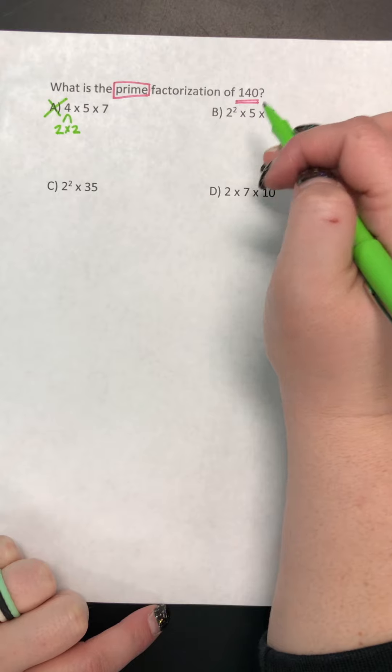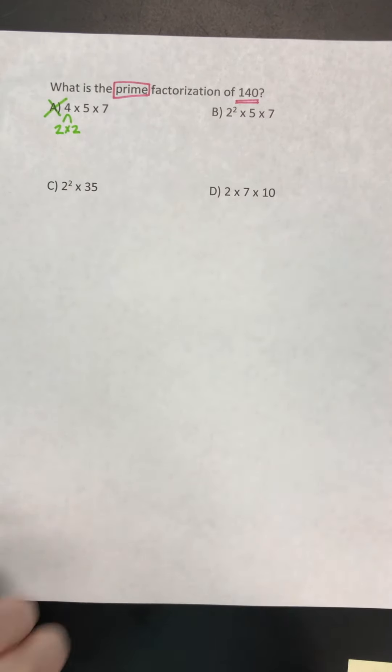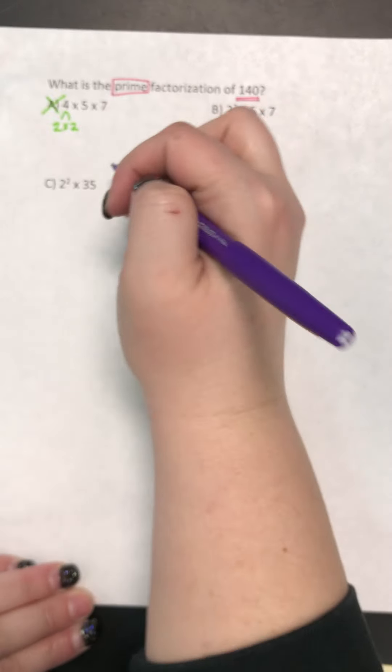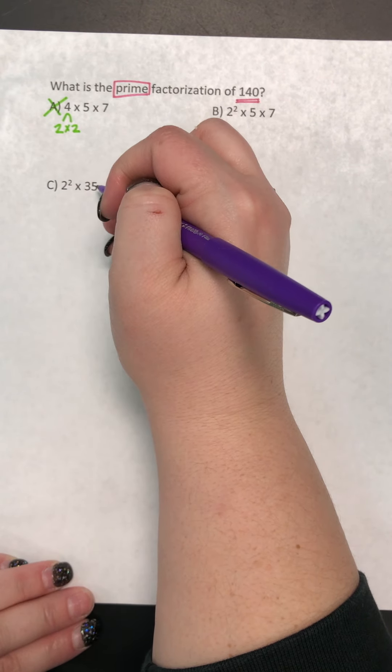So looking at answer choice C, I have 2 to the power of 2 times 35. Well, we've already said that 2 is a good prime number, but is 35 a prime number?